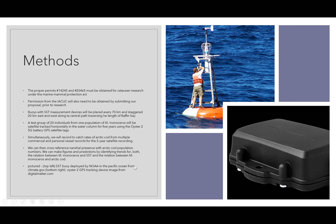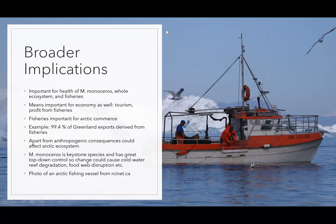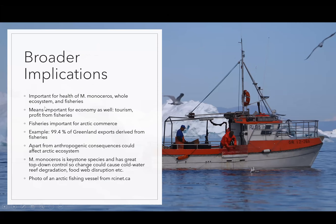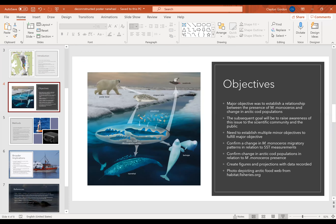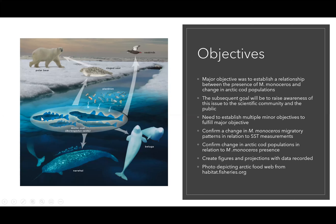Broader implications: Arctic cod is a pivotal part of the arctic ecosystem. You can see in this diagram that arctic cod is food for the narwhal, the beluga, and the ring seal — and the ring seal is food for the polar bear. Arctic cod also feeds on plankton and is food for seabirds. It's a huge part of the arctic ecosystem, and changes in its population would affect the entire food web through top-down control.